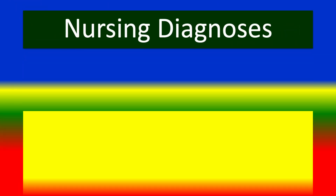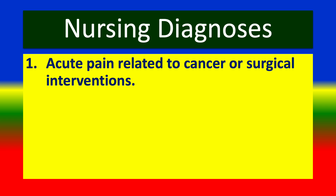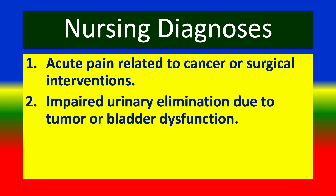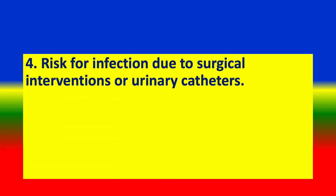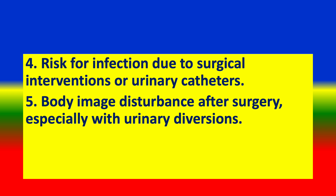Nursing diagnosis: 1. Acute pain related to cancer or surgical interventions. 2. Impaired urinary elimination due to tumour or bladder dysfunction. 3. Anxiety related to cancer diagnosis and prognosis. 4. Risk for infection due to surgical interventions or urinary catheters. 5. Body image disturbance after surgery, especially with urinary diversion.